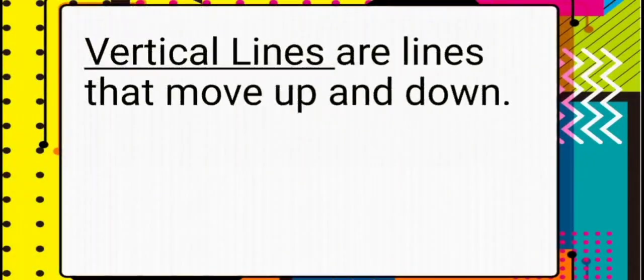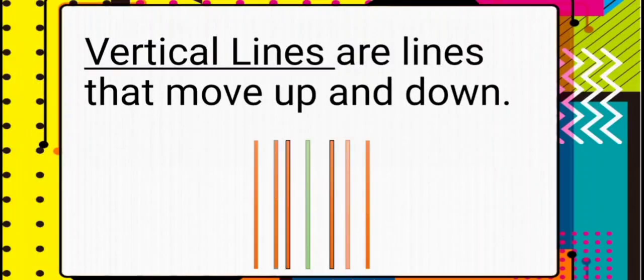Our next example of line is the vertical line. Vertical lines are lines that move up and down, just like our example here. To make a vertical line, start moving from up to down.